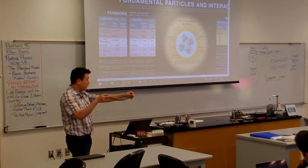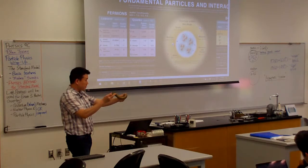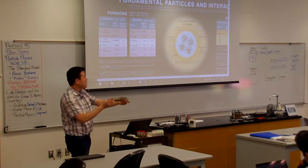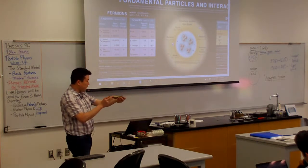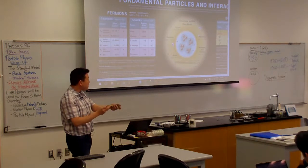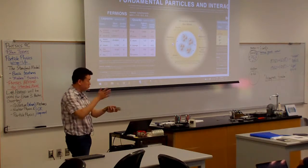So when the two quarks are very close to each other, the interaction, the strong interaction becomes weaker because the string is not as far stretched. So now in particle physics, closer distance means higher energy. So in higher energy, the strong interaction becomes smaller.